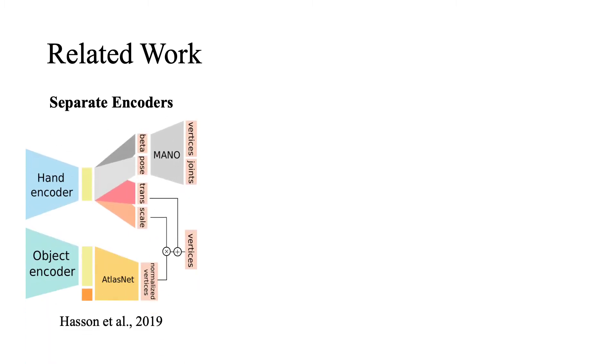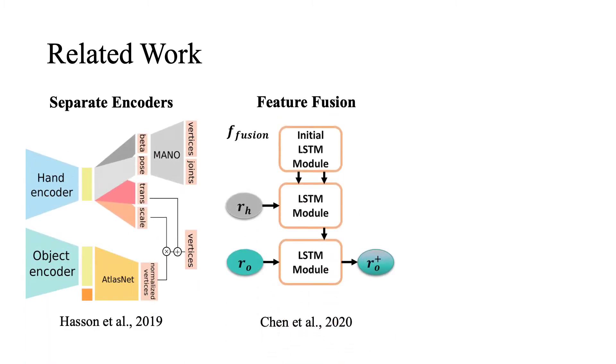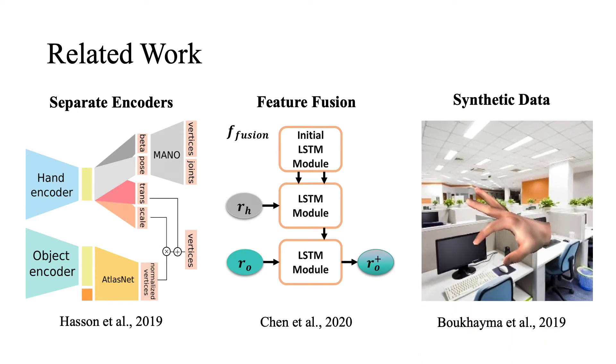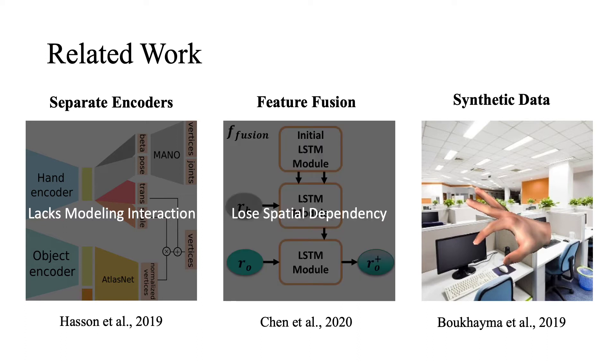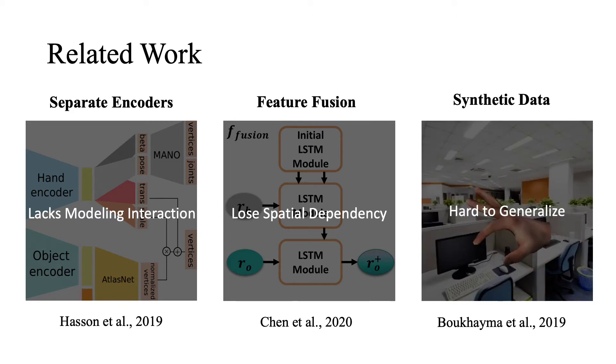Previous works addressed these issues either by using separate networks to encode features, fusing hand-object representations by LSTM to get interaction-aware features, or collecting synthetic data for pre-training. However, using separate encoder networks could not model interaction well. Feature fusion by LSTM fails to capture spatial dependency, and training on synthetic datasets is suboptimal because it's hard to generalize to real-world data.